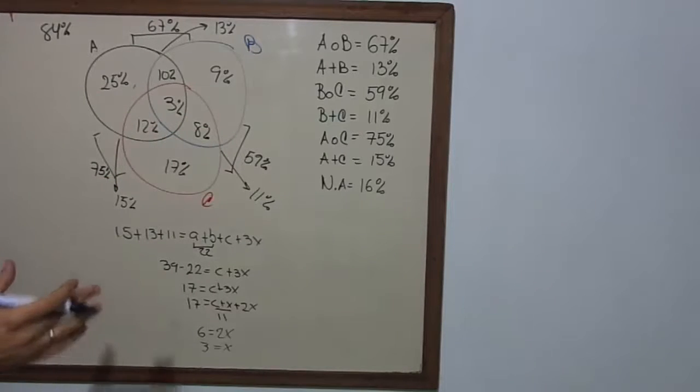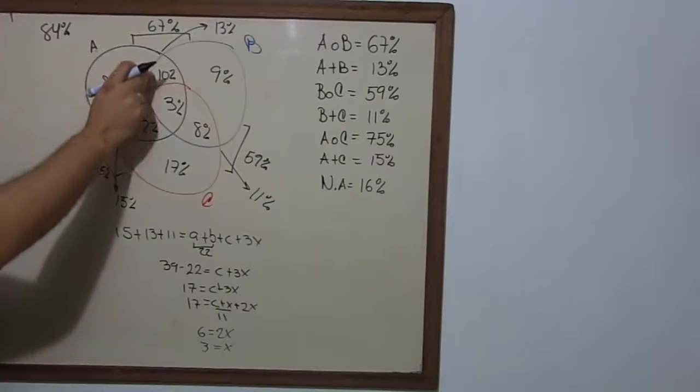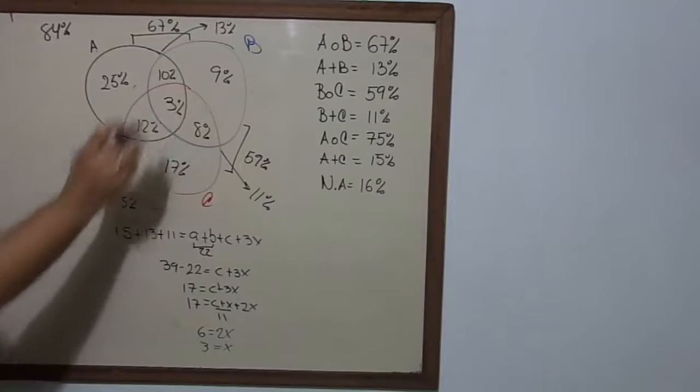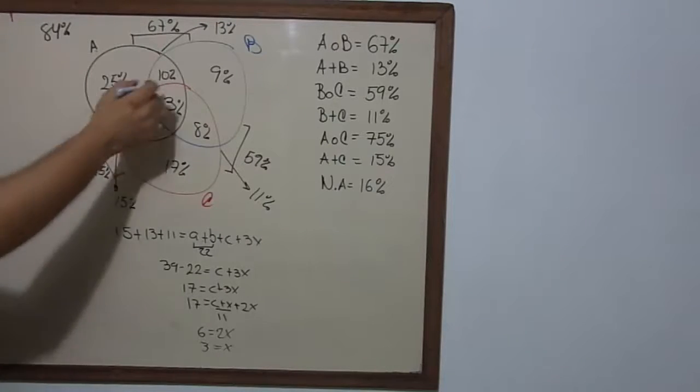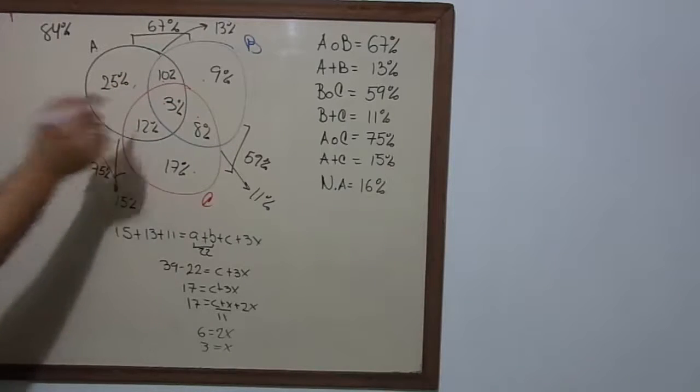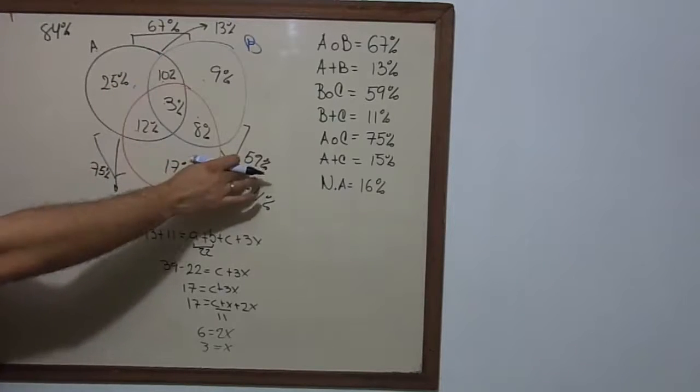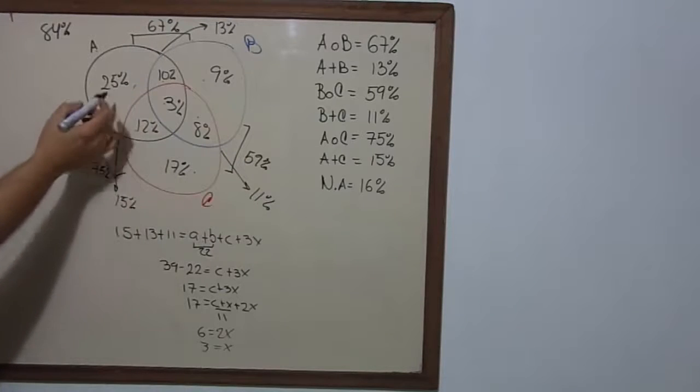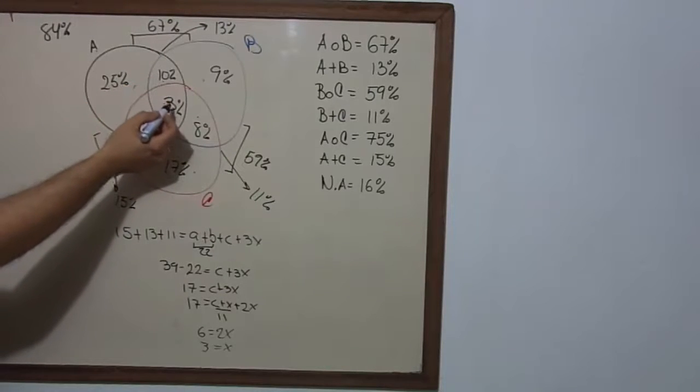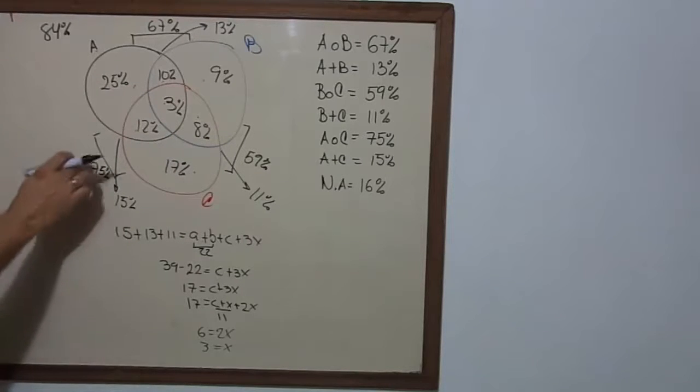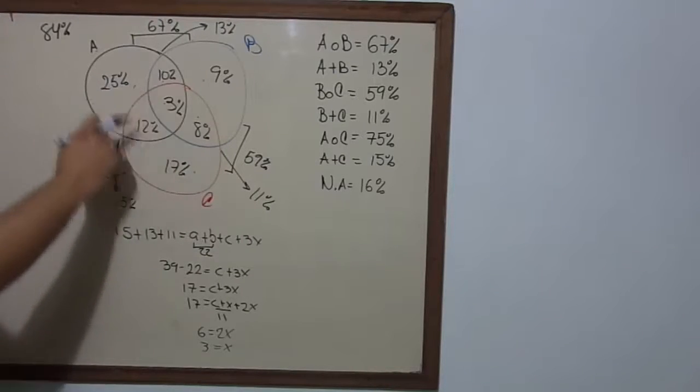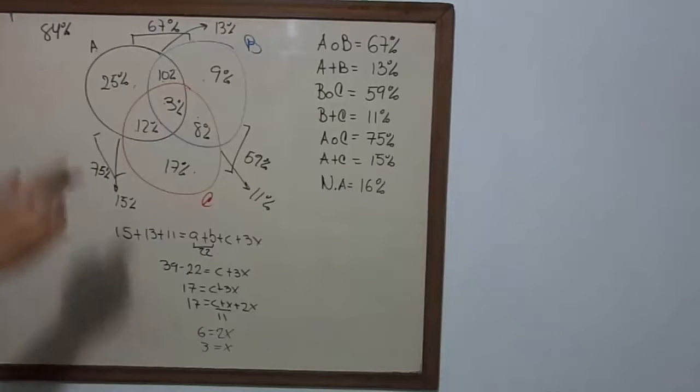And how do we check if this is the right answer? We add this, this, this, this, this, and this. And this is going to give you 67%. And if we add 25 plus 10 plus 3 plus 12 plus 8 plus 17, you get 75%. And if we add them up, all of them are going to give us 84%.